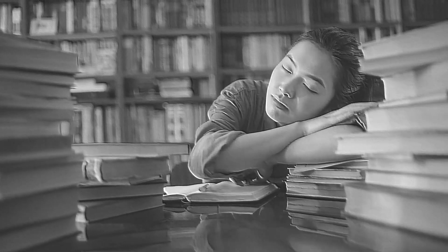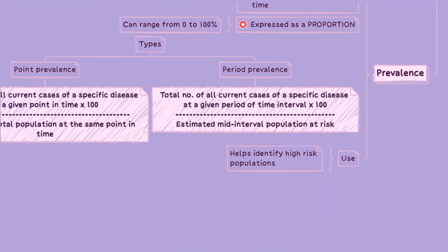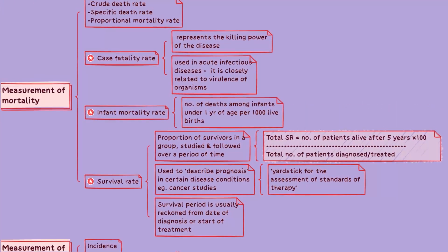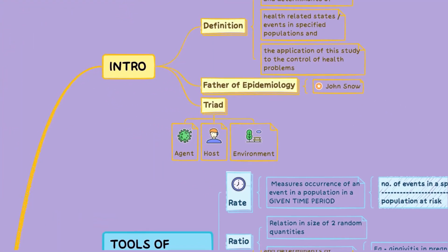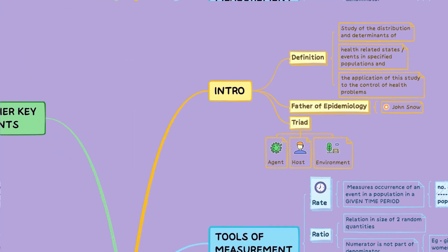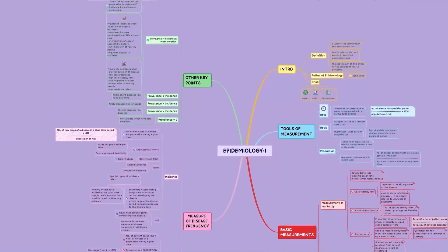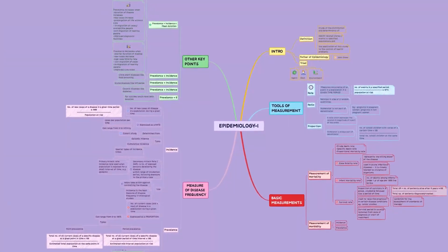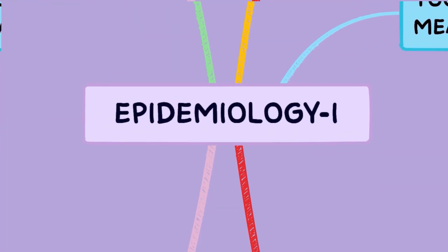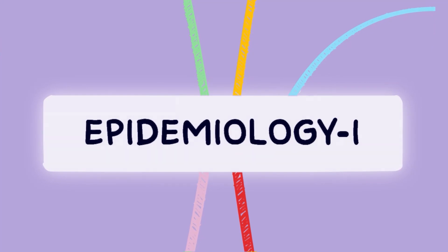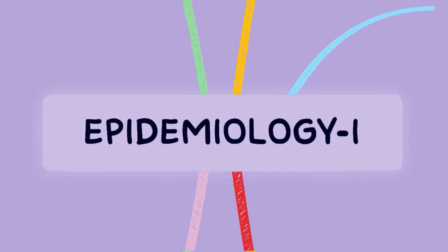Say goodbye to overwhelming textbooks and hello to vibrant interconnected mind maps. Welcome to our new series of videos where we pick each mind map from our mind map bundle and help you run through all the important points you need to remember for your exams. In this mind map, we will cover some important concepts on a very important topic of public health dentistry: Epidemiology. Stay tuned because we have an exciting surprise for you at the end of this video.